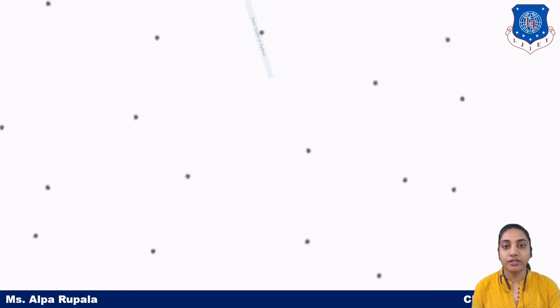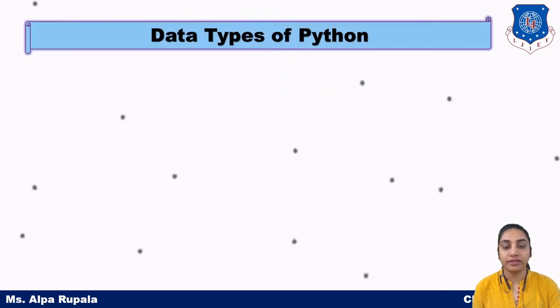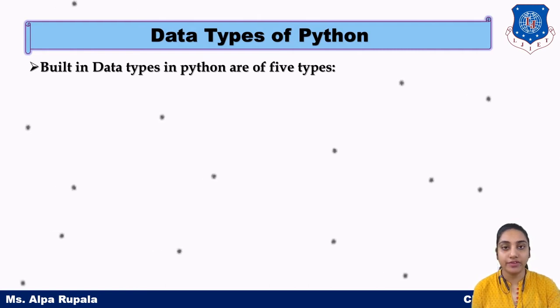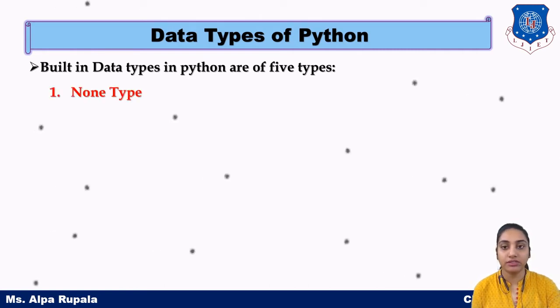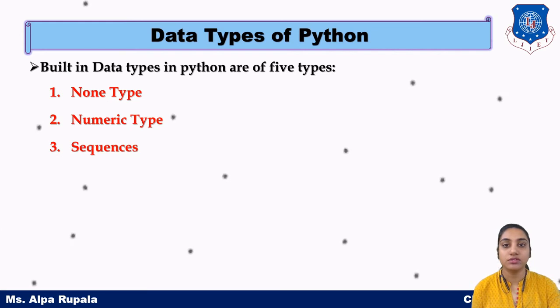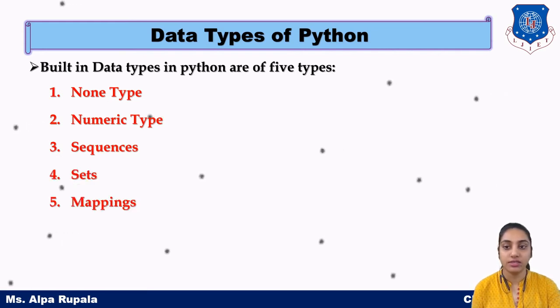Data types of Python. There are basically five built-in data types of Python: None type, numeric type, sequences, sets, and mappings.